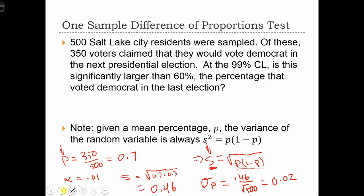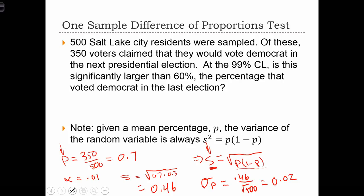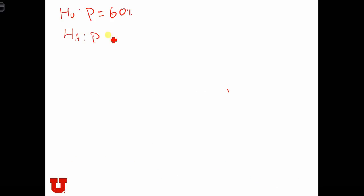Okay, now we have everything that we need to conduct the test. The null hypothesis is that the proportion equals 60%, the same proportion that we had last year. The alternative hypothesis, let's just read the question carefully. Is this significantly larger than 60%? So we're looking for P greater than 60%. We know that alpha equals 1%.